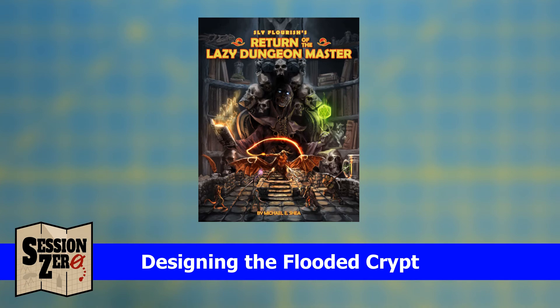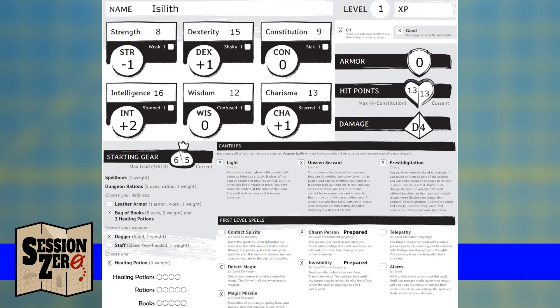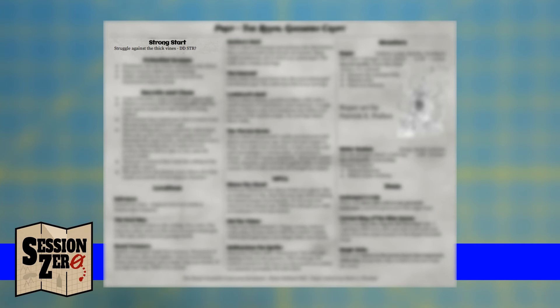I'm going to include a bonus PDF in the Drive-Thru RPG download of this map with everything I discuss here. In Sly Flourish's method, you start by reviewing your characters. I only have one — Isoleth — but I must review everything that's happened thus far: the story, locations, NPCs, everything that has already happened. That's my context. Next you think of a strong start. The last thing Isoleth did in the previous session was walk backwards into the cave to bypass the sprite's trick magical lock. I'll start the session with him struggling against vines to make it through the first chamber — that'll probably be defy danger with strength.